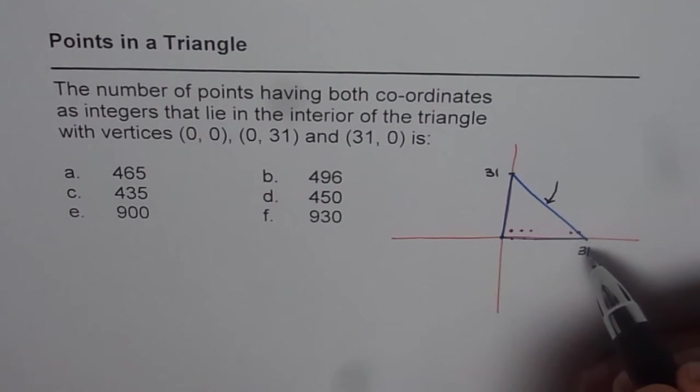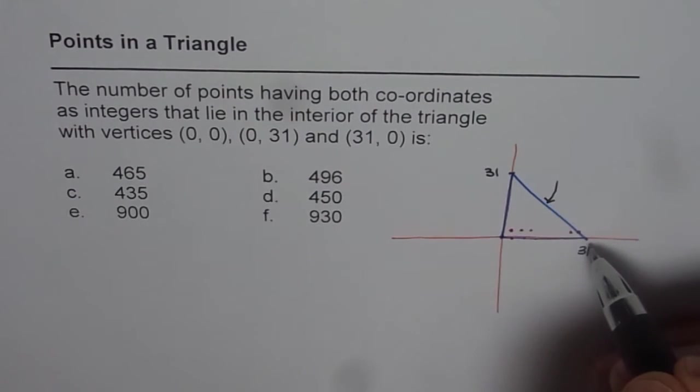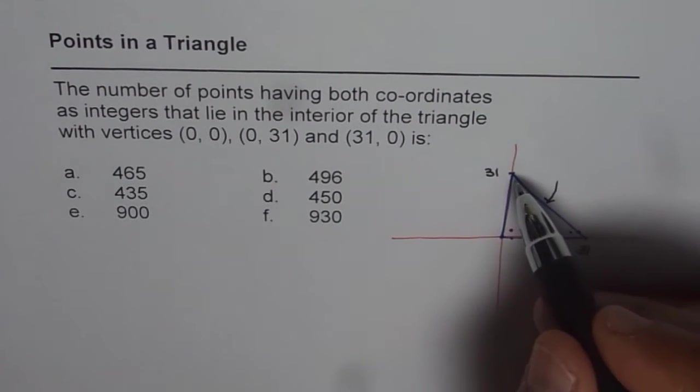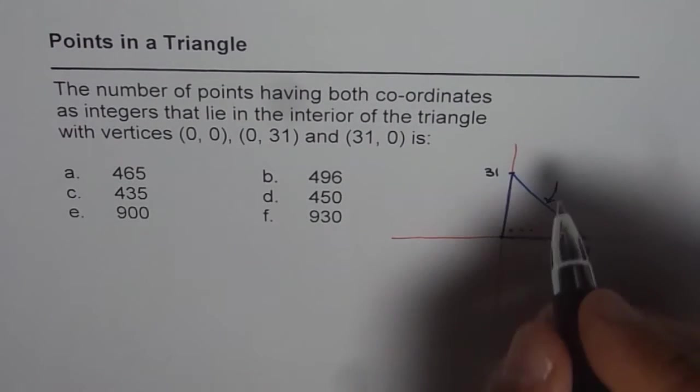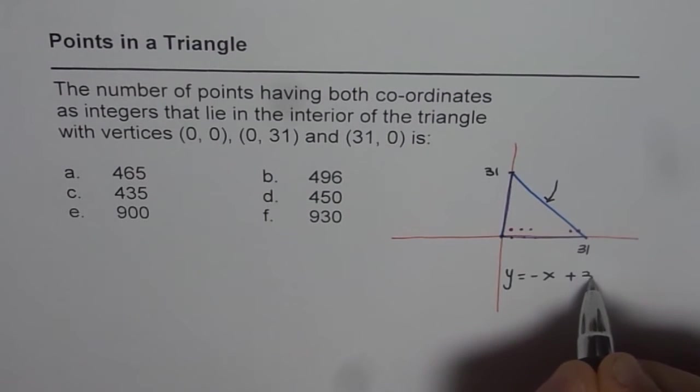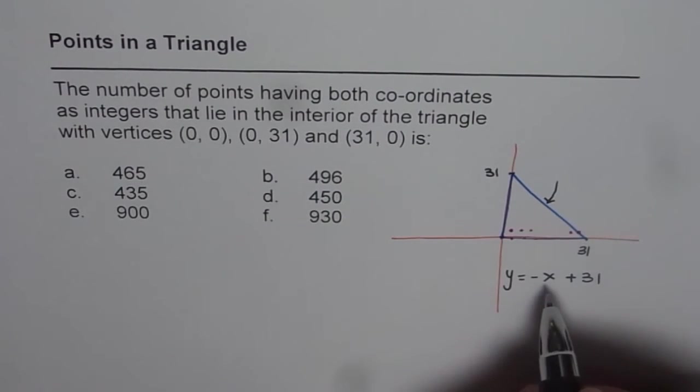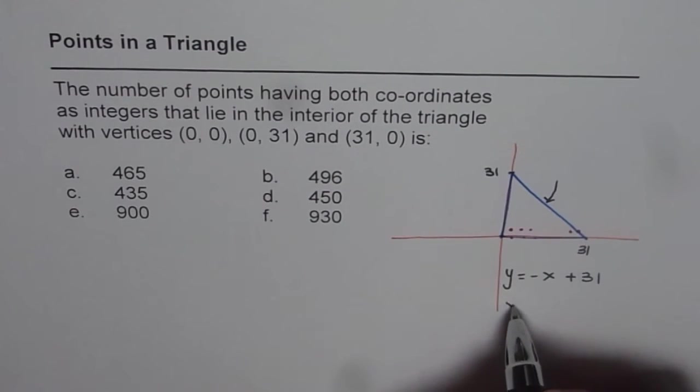Well this line has a slope of negative 1. y is minus 31 and x is 30, so slope is negative 1 and the y intercept for this line is 31. Therefore we can write down the equation of this line as y equals to minus x plus 31. So that becomes the equation of this line. So basically the sum of x and y points which is x plus y is basically 31.